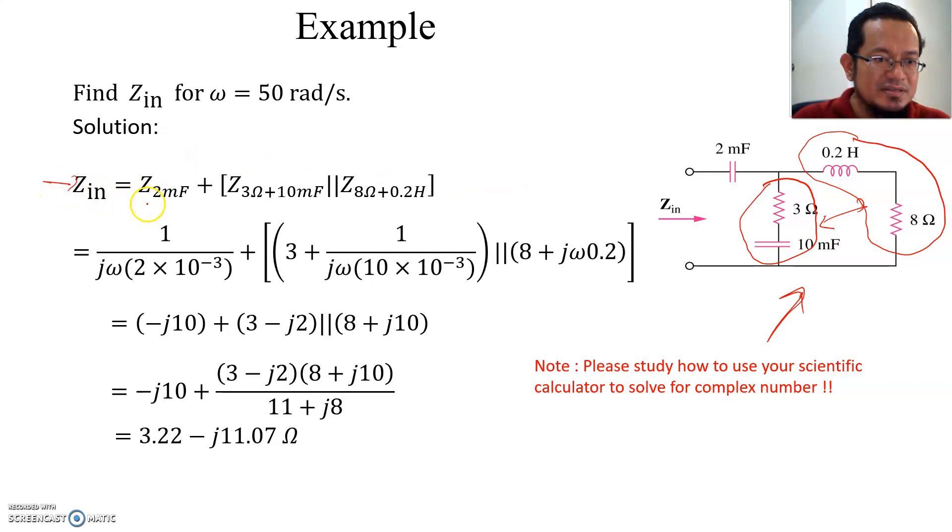You can basically write the total impedance is the 2 millifarad capacitor here plus in series with 3 ohm plus 10 millifarad in parallel with 8 ohm and 0.2 henry combination in series. If you crunch that number you will get this equation here. If you want to calculate by hand manually, go ahead and knock yourself out. But I would advise you on finding how to use your scientific calculator to solve the complex number. Don't have to bother to do all this lengthy calculation to find the right answer. If you can use the calculator, then use it and simplify a lot of work.